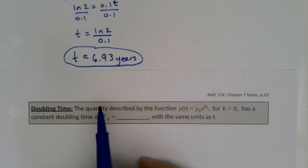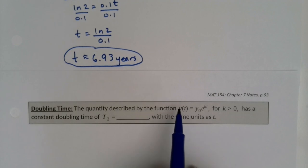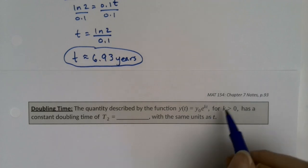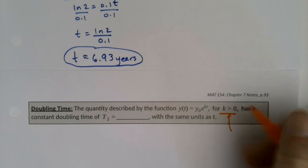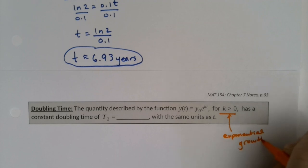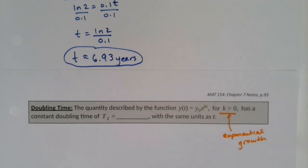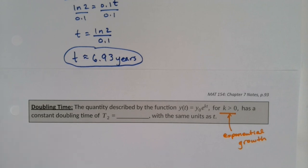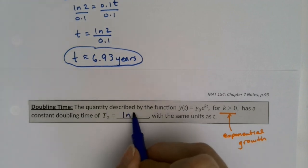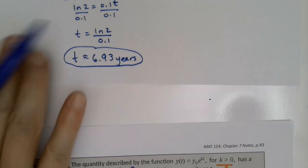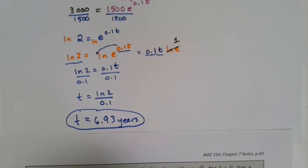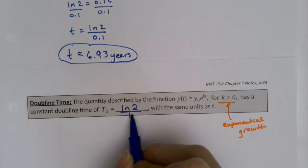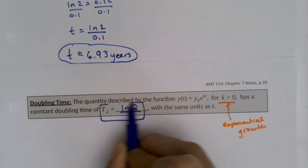For a basic exponential function Y(T) = Y-zero e to the kT, when k is greater than zero — exponential growth — the doubling time is always ln(2) divided by k. If you take the natural log of two and divide it by k, that will always give you the doubling time.